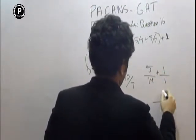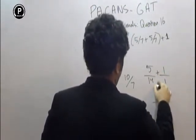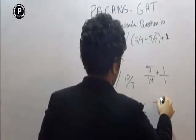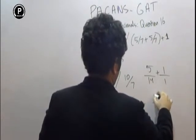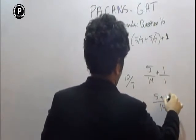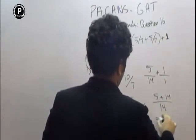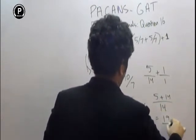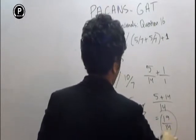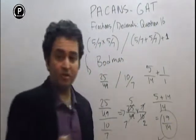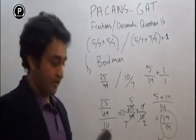You get 14, 5, and 14, which is going to be 19 over 14. So the answer would be 19 over 14, but I am going to explain it to you again.